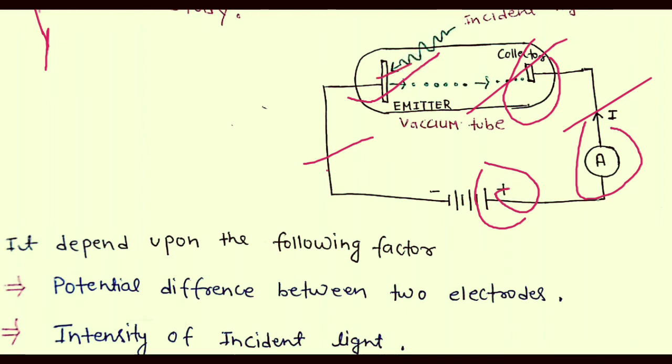Emitted electrons will be attracted to this electrode. An ammeter is used to measure the photocurrent. And here a rheostat is used to vary the potential difference between the electrodes.